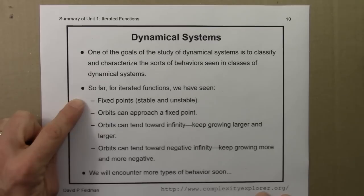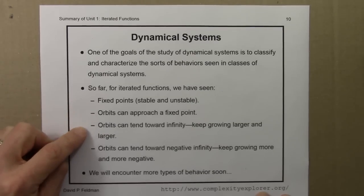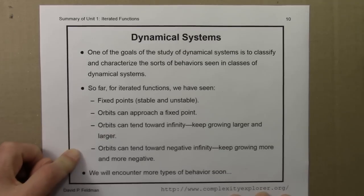Fixed points, both stable and unstable. We've seen that orbits can approach a fixed point, get pulled towards an attractor. Orbits can keep on growing, tend towards infinity, get larger and larger. And they can also tend towards negative infinity. They keep getting more and more negative, moving more and more left on the number line.